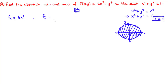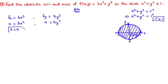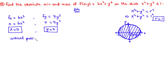We differentiate with respect to x to get fx equals 6x squared, and this term goes to 0. For fy, differentiating y to the power of 4 gives 4y cubed. Setting each to 0: fx = 0 requires x = 0, and fy = 0 requires y = 0. Therefore, our critical point is (0, 0), which is the origin.